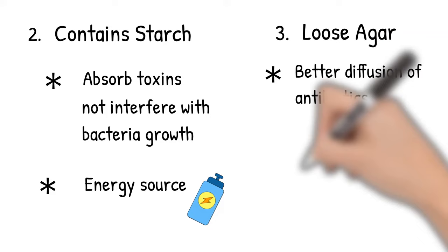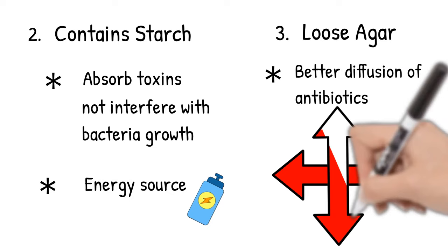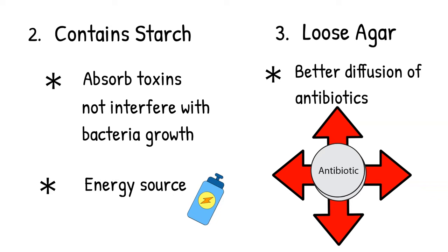Third, Mueller-Hinton agar is a loose agar. This allows for a better diffusion of antibiotics than other types of media agar. Since the antibiotic can be diffused freely, a true zone of inhibition can be established.